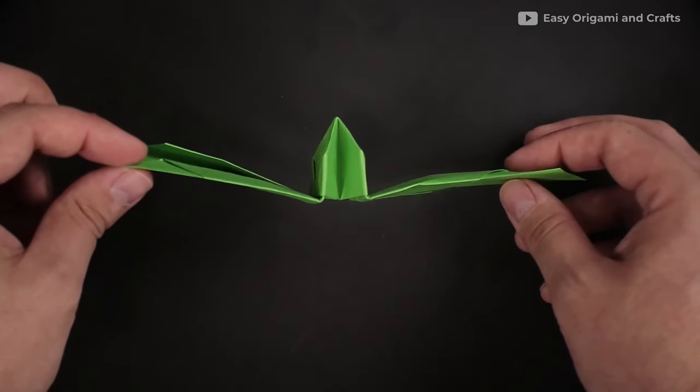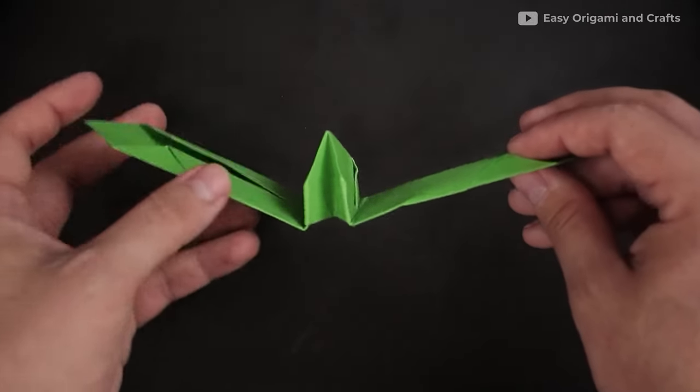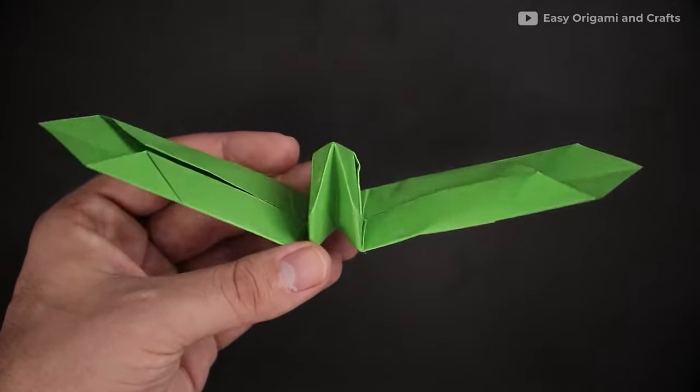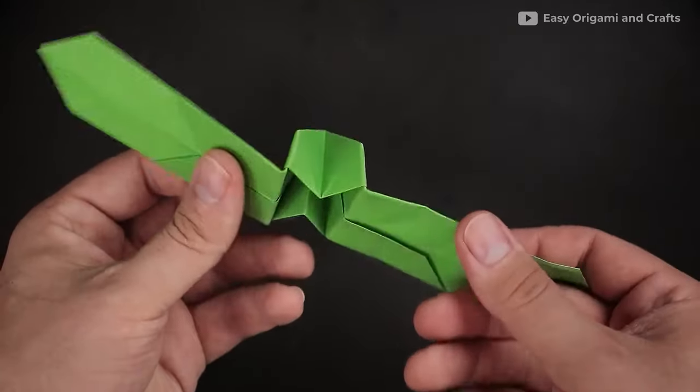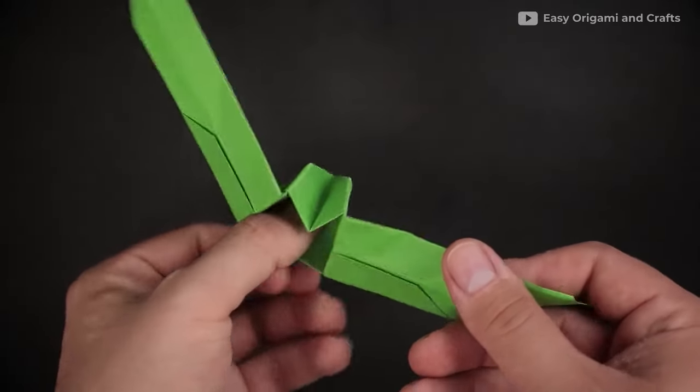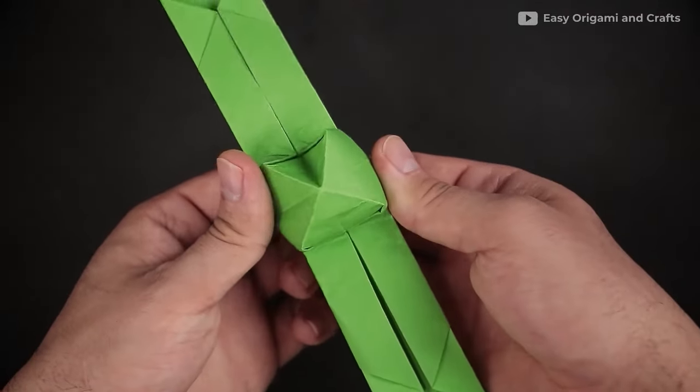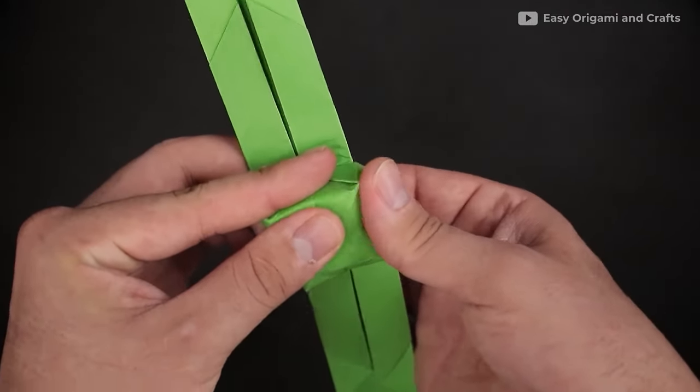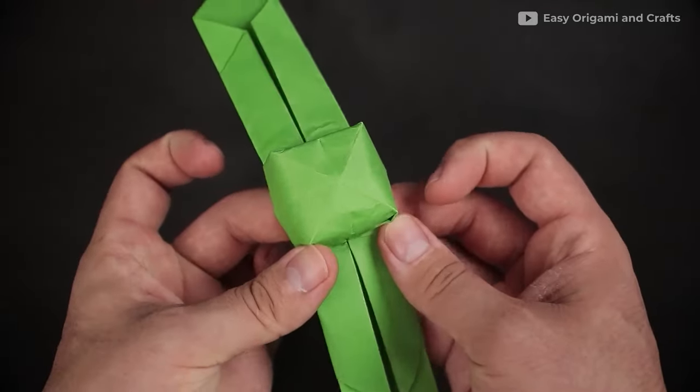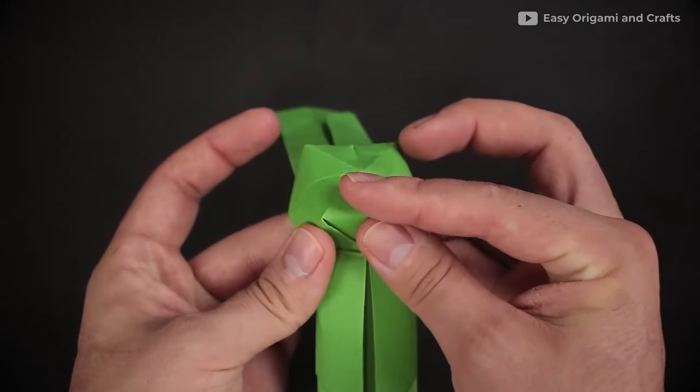As one of the last steps, you're going to have to open up the middle part. You can do that by putting your fingers inside like that. If you want, you can reinforce it, making it very square, but I'll just open it just a little.